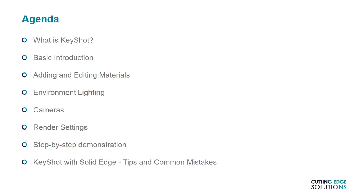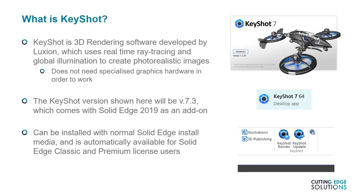So let's ask the obvious question: what is Keyshot and what does it do? Keyshot is a rendering software, meaning that it takes 3D models and creates realistic images from them. An interesting feature is that Keyshot doesn't need a graphics card built into your workstation — it creates these renders with ray tracing technology, which I'll touch on later. I'll be using Keyshot 7.3, because this is the version installed by default with Solid Edge 2019 if you have Classic or Premium licenses. If you're using Foundation or Design & Draft, it's still available but has to be bought separately.